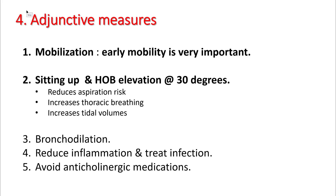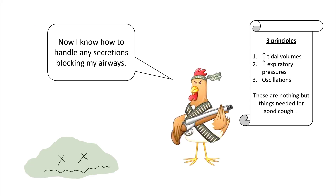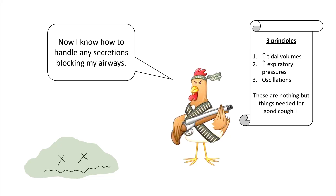Adjunctive measures include early mobilization, sitting up, and head-of-bed elevation, which reduces aspiration risk, increases thoracic breathing, and increases tidal volumes. Use bronchodilation where indicated, treat the underlying infection, and reduce inflammation. Certainly avoid anticholinergic medications, which tend to dry out secretions. All the various methods have three basic principles: high tidal volumes, higher expiratory pressures, and oscillation — and if you think about it, these are nothing but the things needed for a good cough.